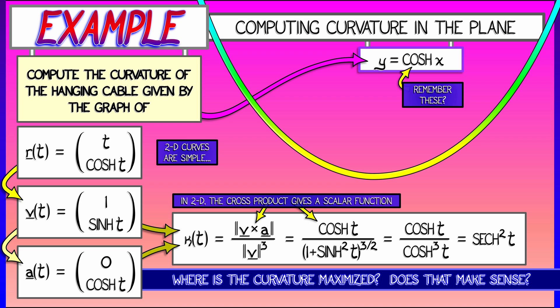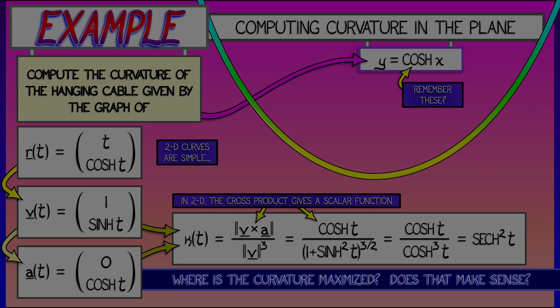Go back, review your hyperbolic secant, and see if it makes sense. Where is the curvature maximized? Is this curvature always non-negative? Have we gotten something that makes sense? And the answer is, yes, we have.